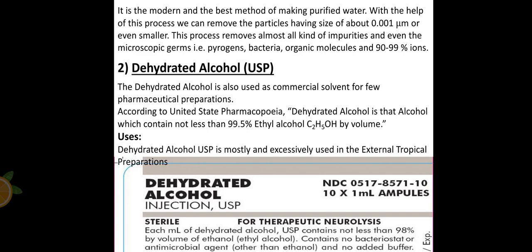Reverse osmosis is the modern and best method of making purified water. With this method, we can remove particles of size 0.01 micrometer and even smaller. It also removes all kinds of impurities and also germs, pyrogens, bacteria, organic molecules, and 90 to 99% of the anions.